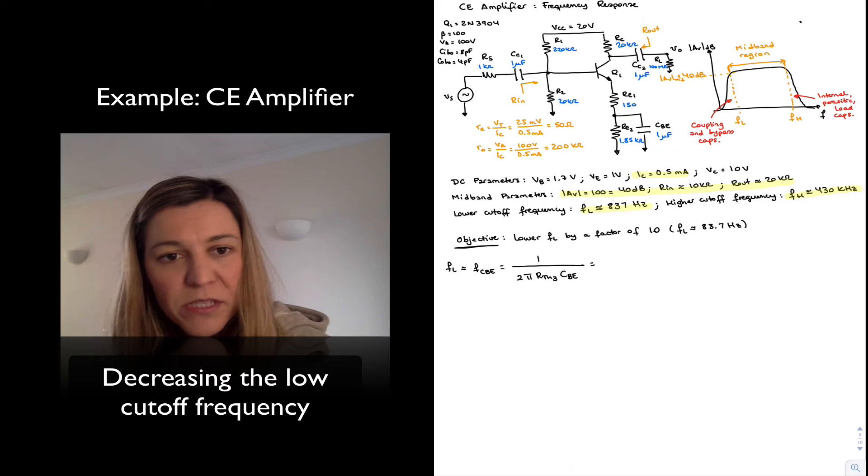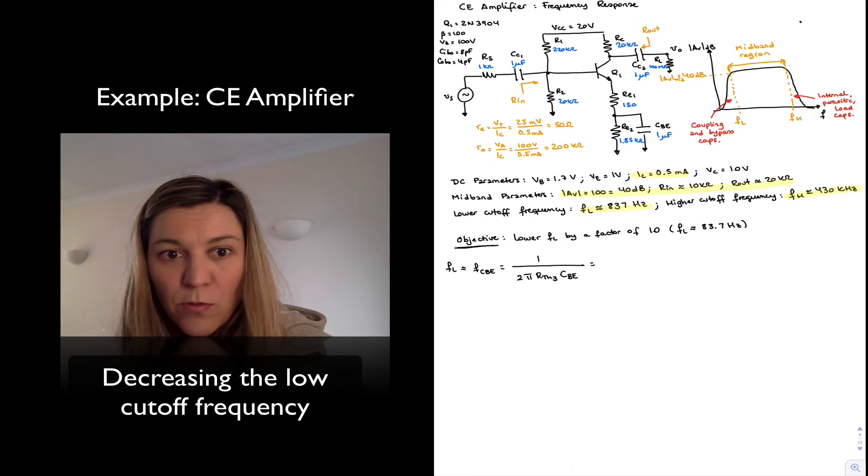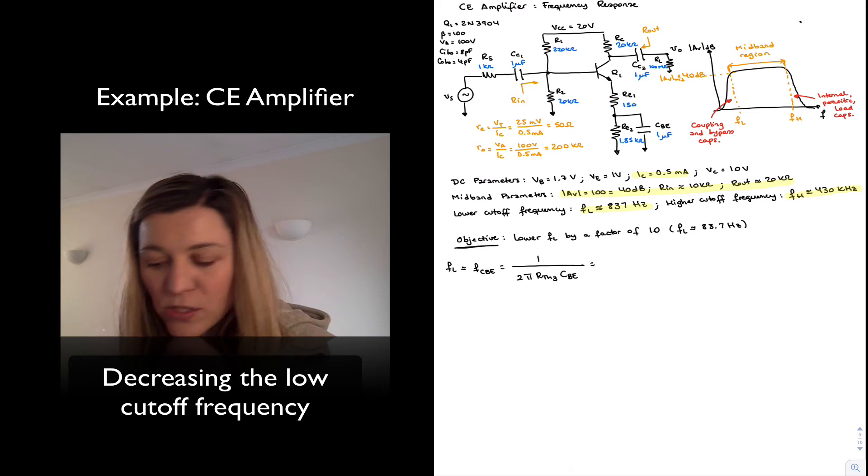Now the resistance is going to be something that's going to be more difficult to play with. The reason for that is as soon as we start modifying R1, R2, it's going to play a role into the DC bias point of our circuit. And so we will typically play with the capacitor values to try to move our cutoff frequencies one way or the other.